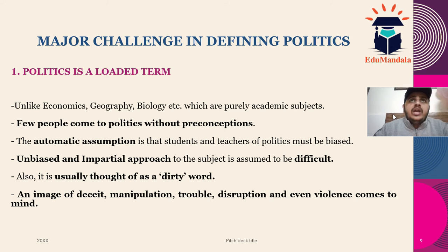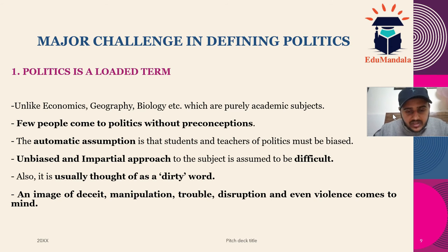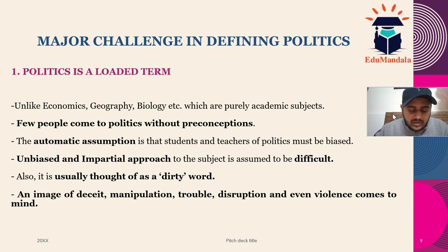When you come with preconceived notions to study political science, it is very likely that when you propose a definition of politics, it will not be unbiased or impartial — your definition may be informed by your bias. In that context, we can't authoritatively say that what a single individual says about the definition of politics is correct, because bias is inherent when we consider politics. That is why we can't agree on one term, and different definitions have been proposed.